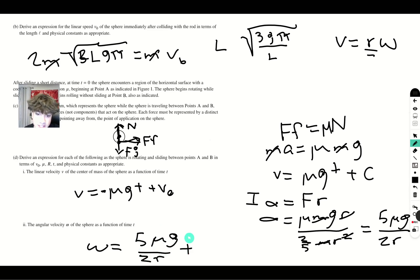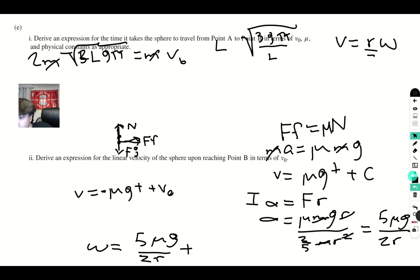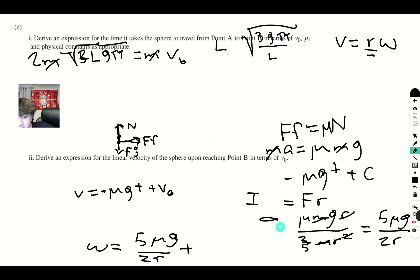That will give you omega equals 5 mu g over 2 r times t. And the reason why this is positive is because the omega is going to be increasing. We know that the ball begins not rolling, and it ends rolling. So let's go to the final page. I'm going to erase most of this stuff here, but I'm going to keep these pieces just because they are crucial to the next steps.